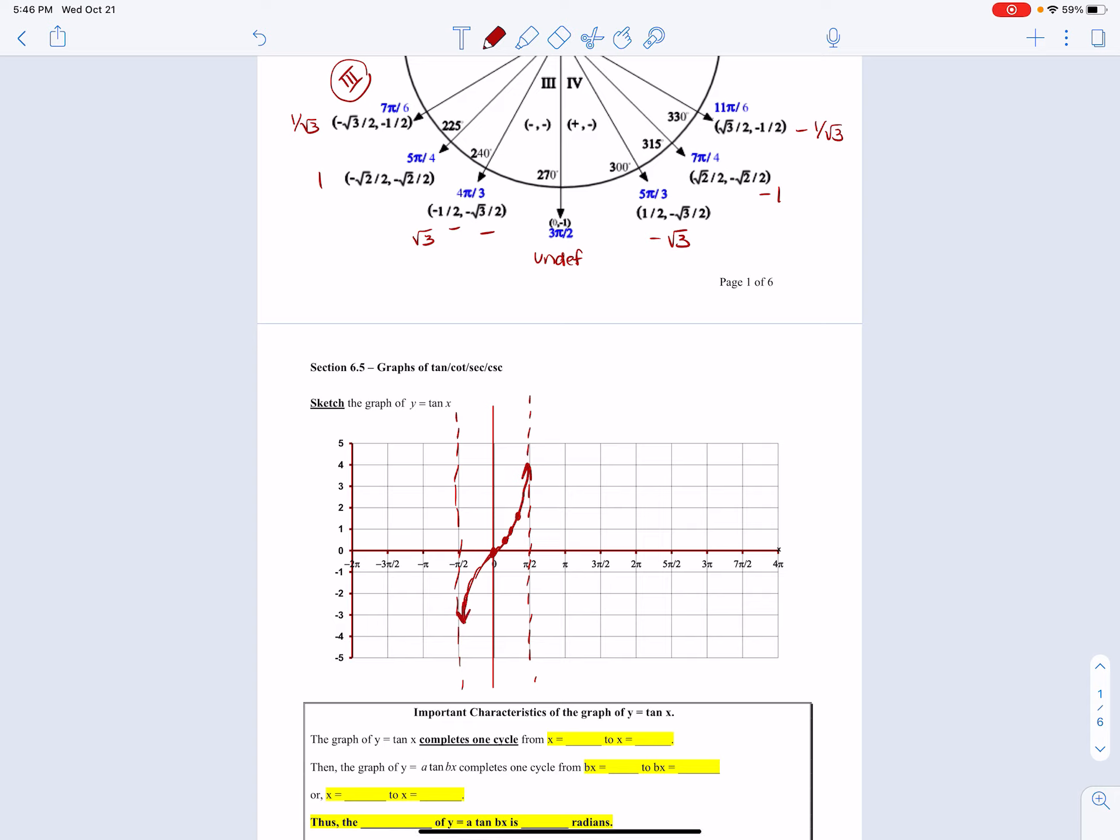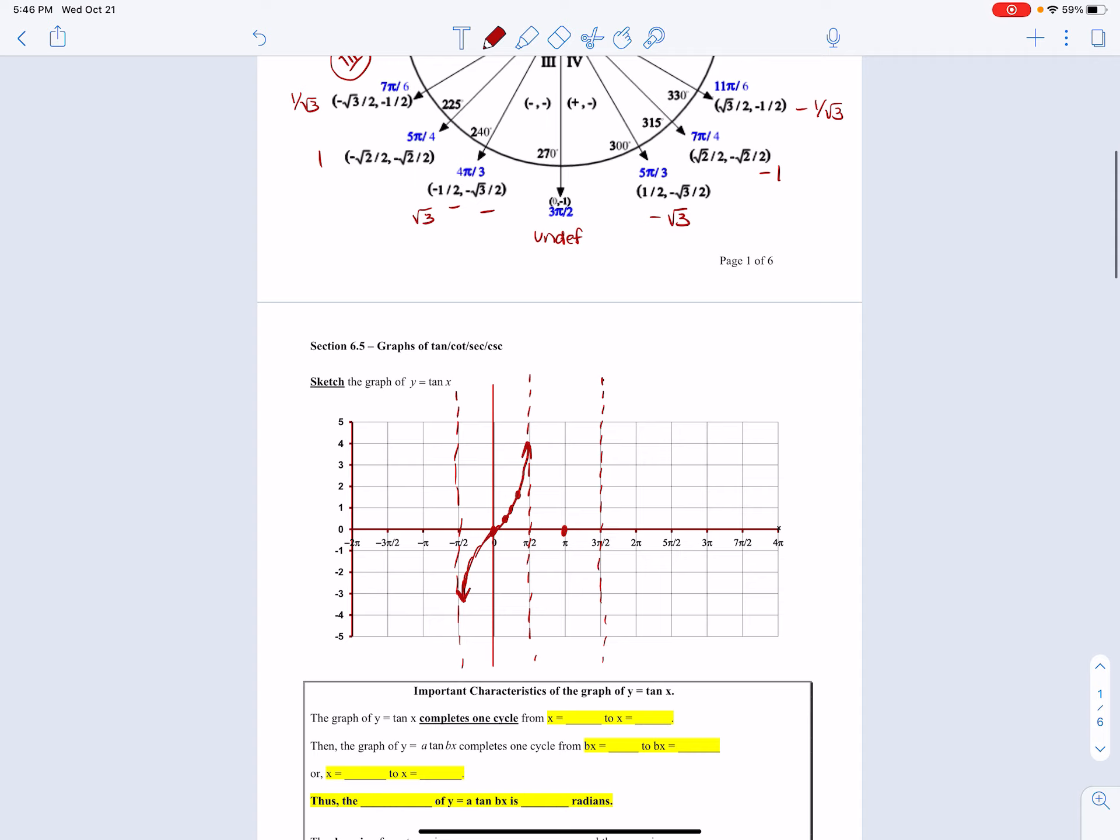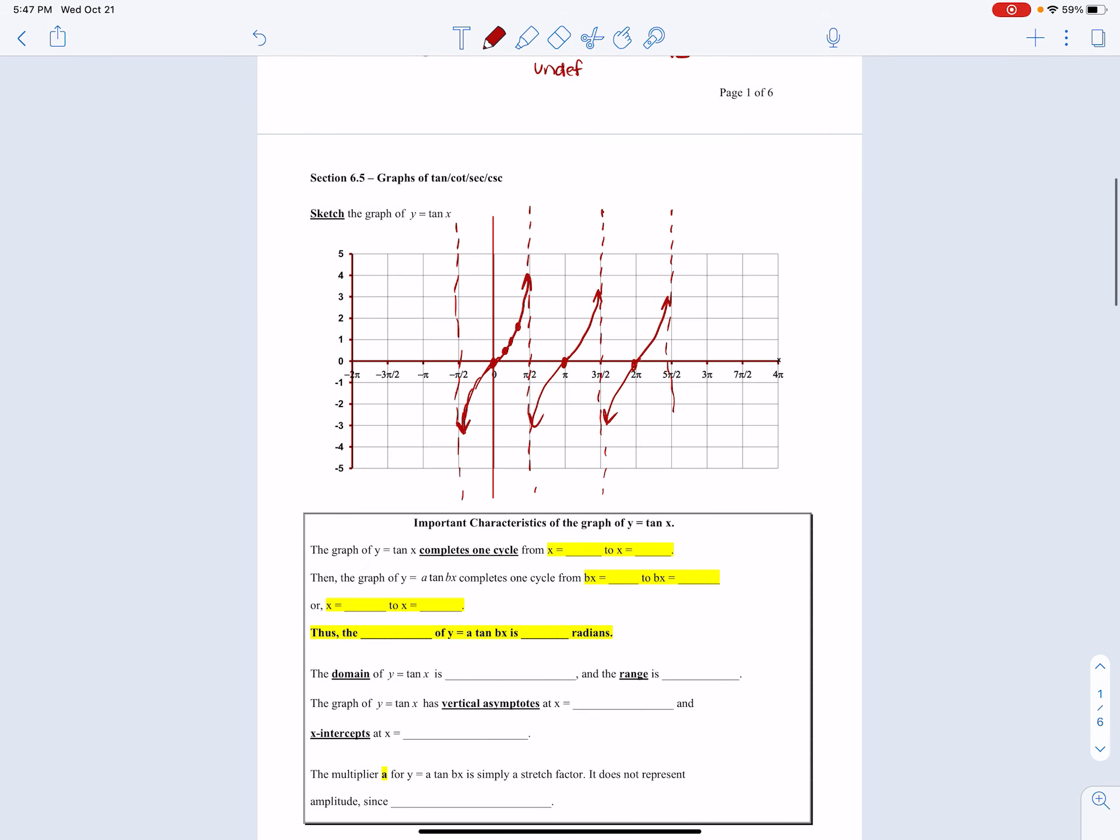Looking at those unit circle values again, notice tan(π) = 0. In quadrant 3, the values increase again and decrease again on that side. So we have a very interesting looking graph for tangent. We could keep drawing periods, but notice the period is π. So y = tan(x) completes one cycle from x = 0 to x = π.